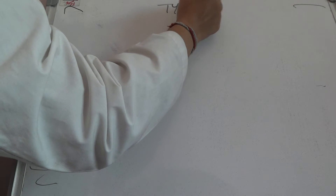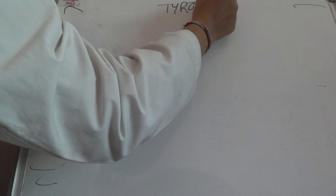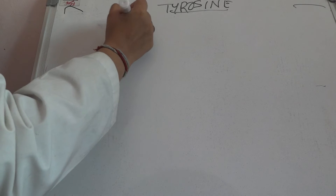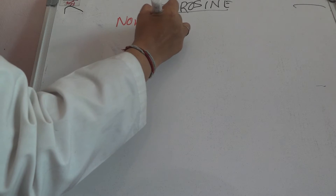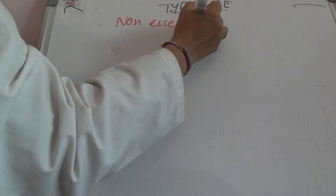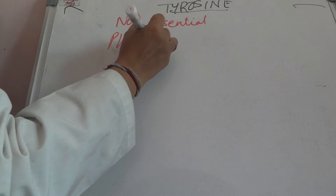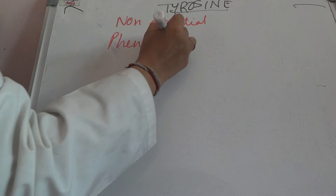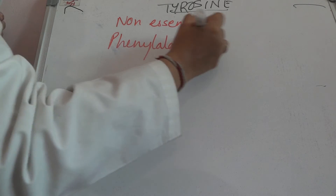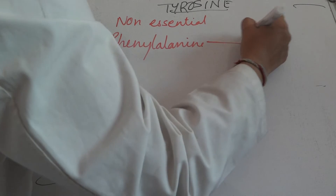Hi everybody. Today we discuss tyrosine amino acid. Tyrosine is a non-essential amino acid and it is formed from phenylalanine. Phenylalanine forms tyrosine.